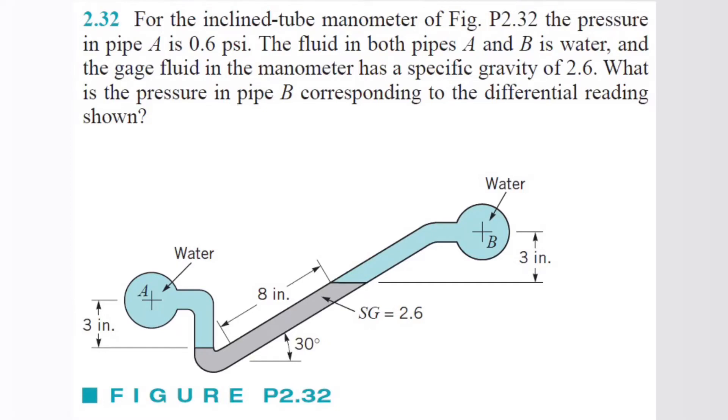Alright, so what's going on? We got another one right here. This is for the inclined tube manometer. The pressure in pipe A is 0.6 psi. The fluid in both pipes A and B is water, and the gauge fluid in the manometer has a specific gravity of 2.6. So what's the pressure in pipe B corresponding to the differential reading shown? Cool, so let's get started.